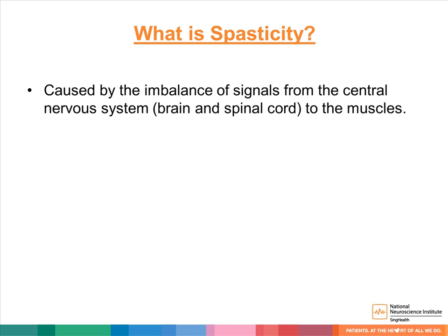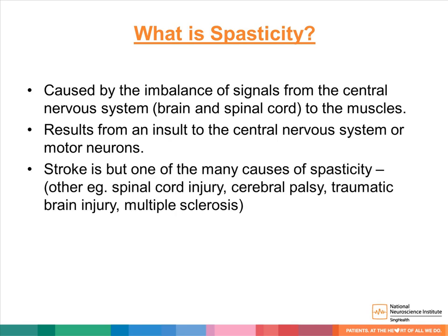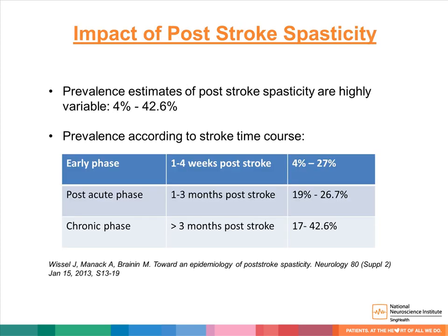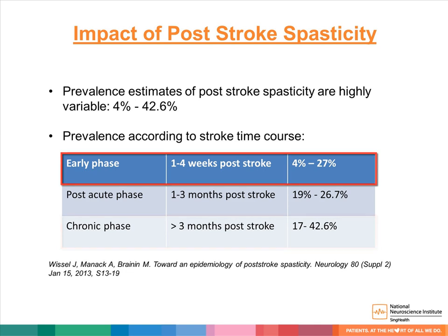Spasticity is caused by an imbalance of signals from the central nervous system to the muscles, resulting from an insult to the central nervous system or motor neurons. Spasticity is found in a myriad of conditions, of which stroke is one. The prevalence of post-stroke spasticity is estimated at about 30 to 40%, found more prevalent in the chronic phase of a stroke, but can present within the first few weeks after stroke onset.